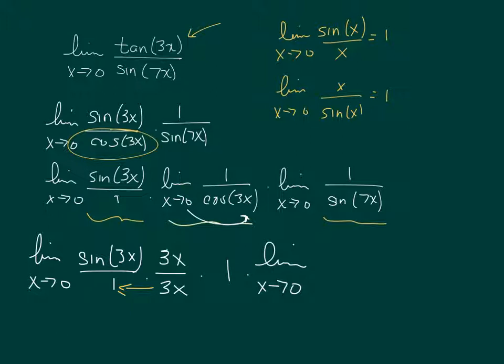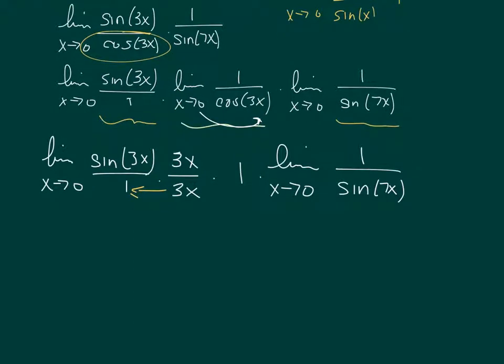And then this last piece, the limit as x approaches 0 of 1 over sine of 7x. Again, I would love this to be 7x over sine of x. So let's multiply this by 1, but let's call 1, 7x over 7x.